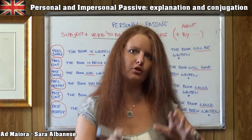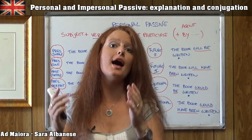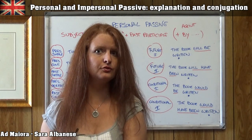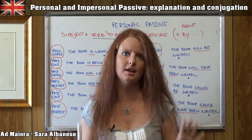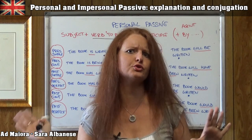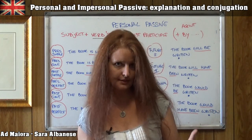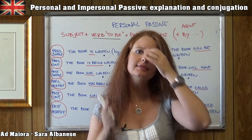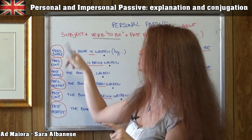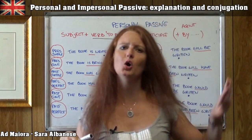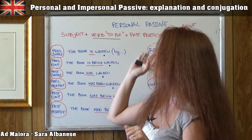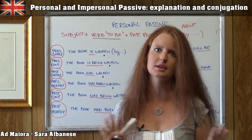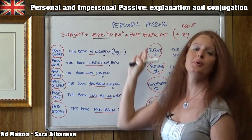The verb changes from active to passive form, and the subject of the active form becomes an agent in the passive form. It is not compulsory — it is not necessary to express that; I can also leave it out. How can we form this passive form? Subject first of all — the book in my case — then the verb 'to be,' which is very important because when I conjugate the passive form I just have to conjugate 'to be.' The rest of the sentence, the remaining part, is the same and doesn't change. So: verb 'to be' and then the past participle.